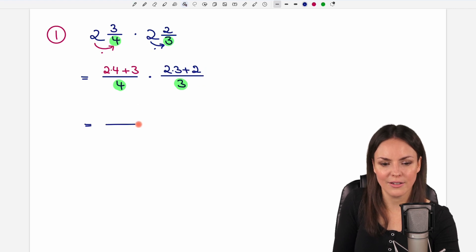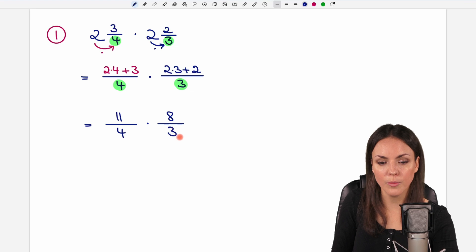Now, let's calculate this. 2 times 4 equals 8 plus 3 equals 11. We keep the 4 on the bottom. And then with our second fraction, we have 2 times 3 equals 6 plus 2 equals 8, and the 3 on the bottom.